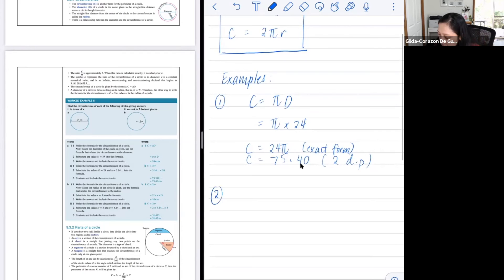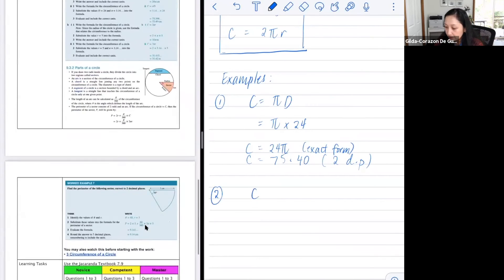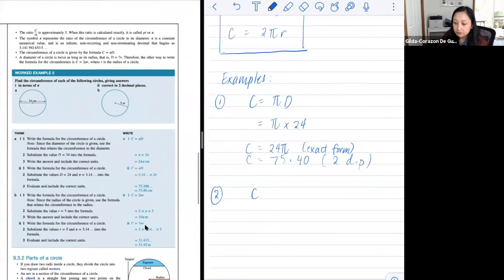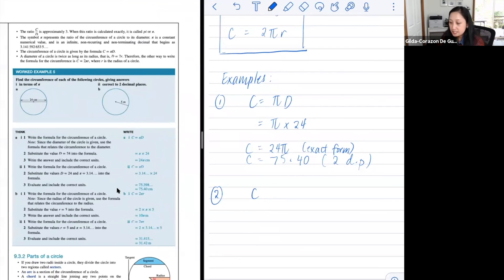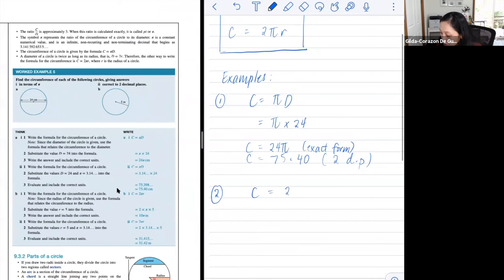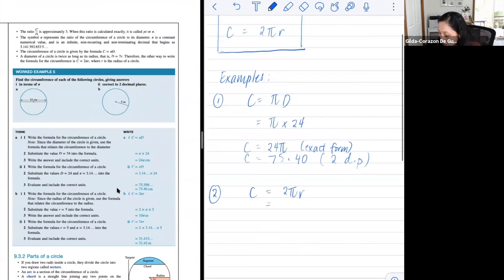To have the second example there. This time, we're given the radius, not the diameter. And therefore, we've got C equals, this time we use 2πr. And now, you can write down what it means. And the radius this time is five. So if we are to write it down in exact form, what we will be doing here is remember the phrase numbers first, then letters.